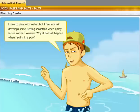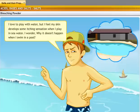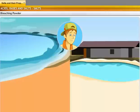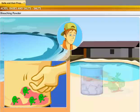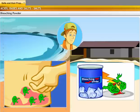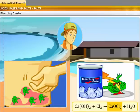I love to play with water. But I feel my skin develops some itching sensation when I play in seawater. I wonder why it doesn't happen when I swim in a pool. The microscopic organisms or small germs present in seawater irritate the skin. Whereas the water in a pool is treated with bleaching agents like bleaching powder that kills insects and germs. Bleaching powder is chemically called calcium oxychloride which is obtained by passing chlorine gas through calcium hydroxide.